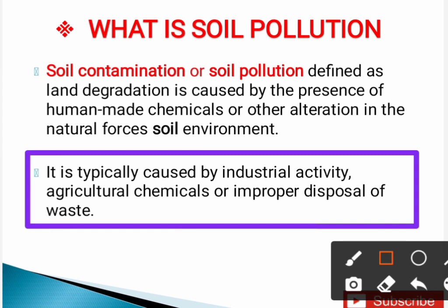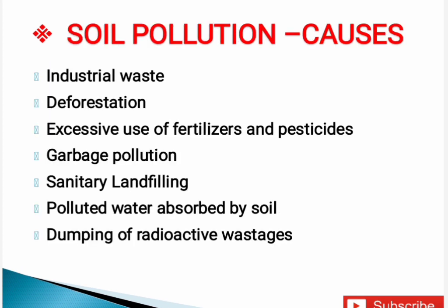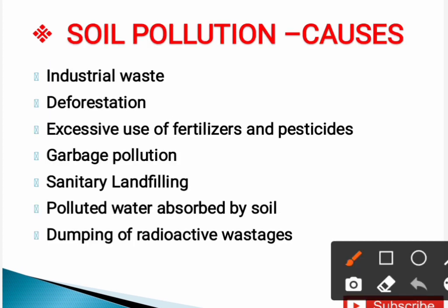Natural causes are generally occurred due to some natural forces. Now, what are the causes of soil pollution? The causes can be categorized into natural causes and man-made or artificial causes. Number one is industrial waste — industrial wastage is the main cause of soil pollution, and the soil can deteriorate. Another cause is deforestation.